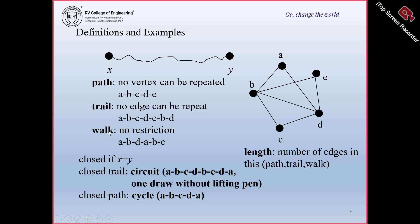When you define a path, we say that a path is a walk in which no vertex is repeated. When you define a trail, we say it is a walk in which no edge can be repeated. Now, if the starting vertex and ending vertex of your walk, path, or trail are the same, then we call it closed. A walk is closed if x is equal to y.